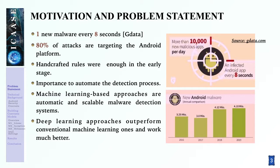According to GE data, there are more than 1.9 million new mobile applications by the end of the second half of 2019, meaning that there is a new mobile application every eight seconds. 80% of attacks are targeting the Android platform. In the early life of mobile malware, which starts with the KBIR malware in 2004, manual or handcrafted rules were enough to detect most of them. Nowadays, it's important to automate the detection process in order to remedy the increasing and alarming speed of malware evolution.